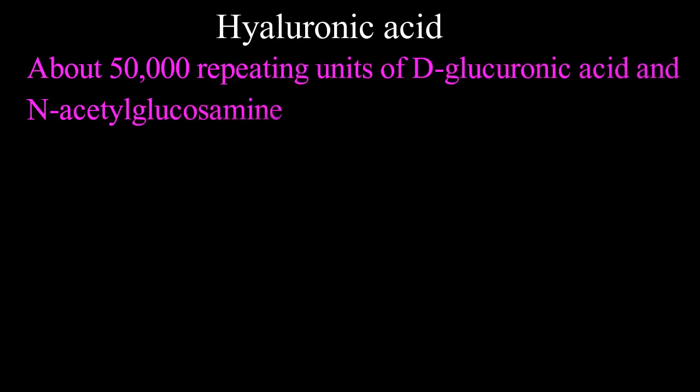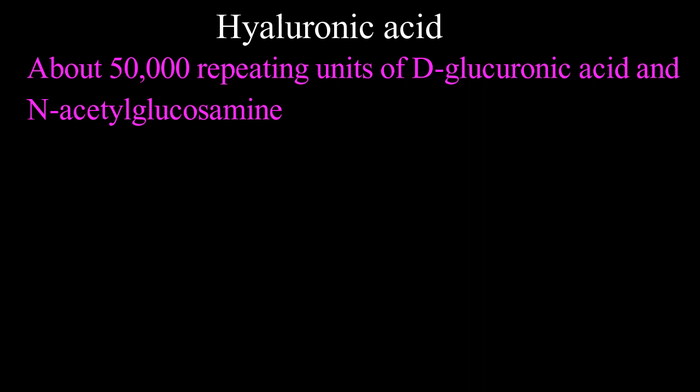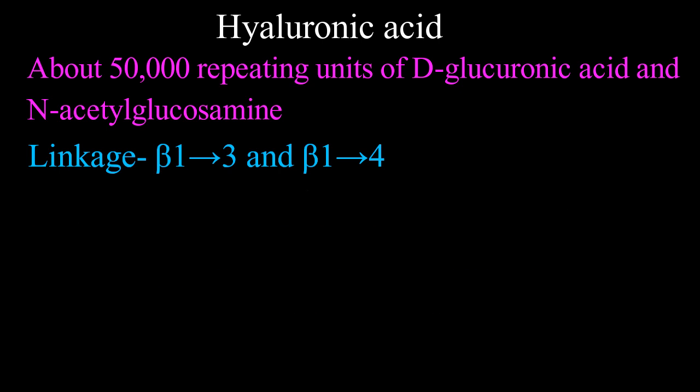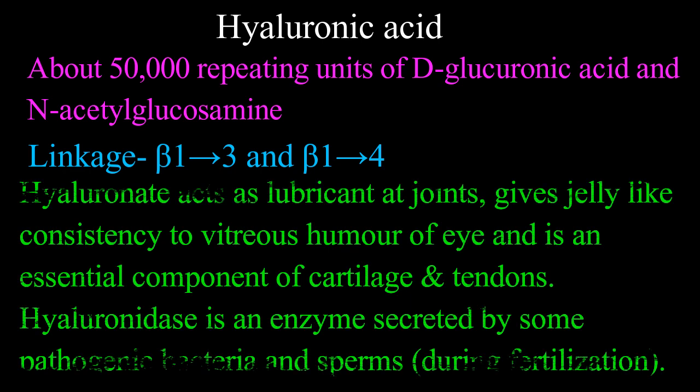Hyaluronic acid consists of about 50,000 repeating units of D-glucuronic acid and N-acetylglucosamine. These two monosaccharides are held together by beta-1,3 and beta-1,4 linkage. Hyaluronic acid acts as a lubricant at joints, gives jelly-like consistency to the vitreous humor of the eye, and is an essential component of cartilage and tendons. Hyaluronidase is an enzyme secreted by some pathogenic bacteria and sperms during fertilization.